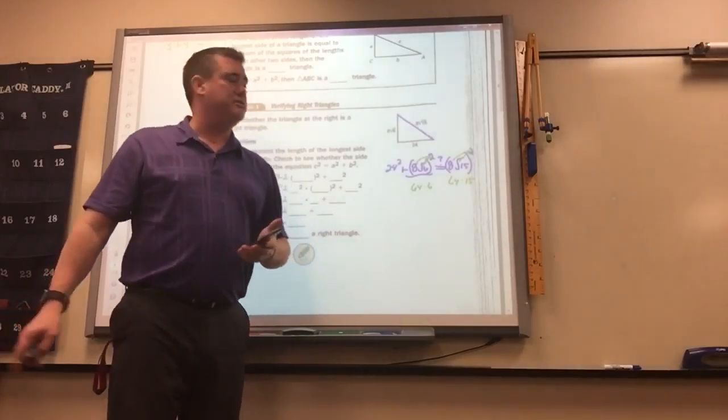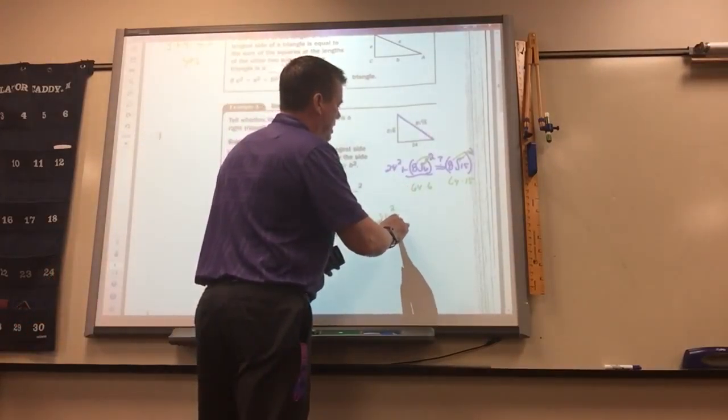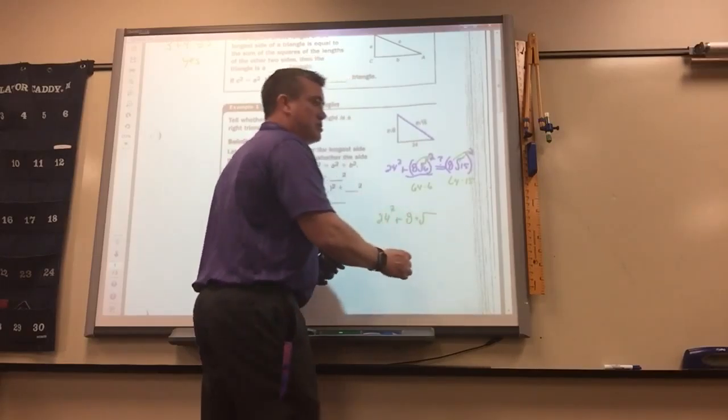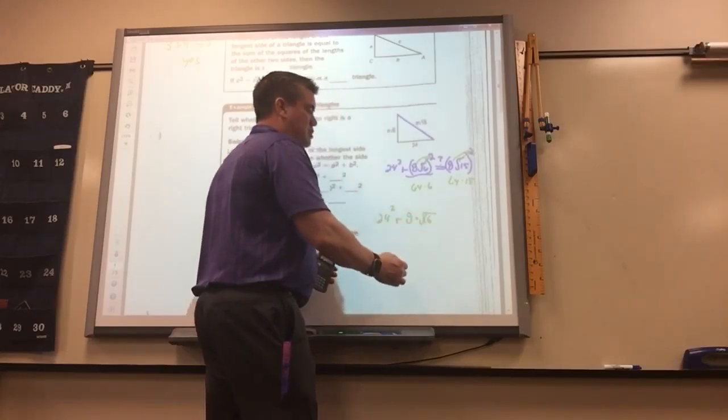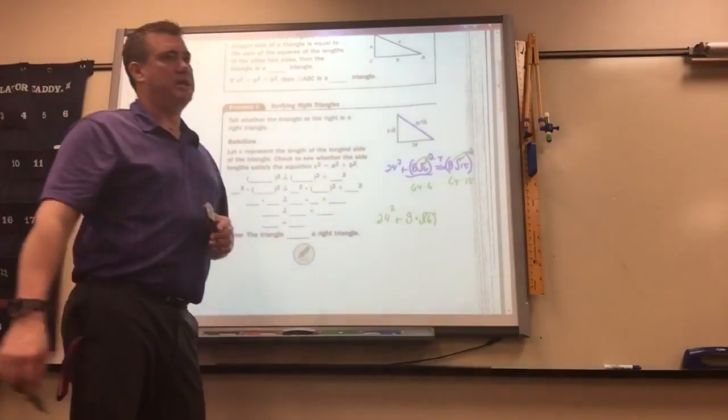And on these calculators it's tricky because if you put in 24 squared plus 8, and then you hit the times, and then you put the square root sign, and then you put a 6. Remember, it starts with a parenthesis. You've got to put a parenthesis there to show that it's the end.